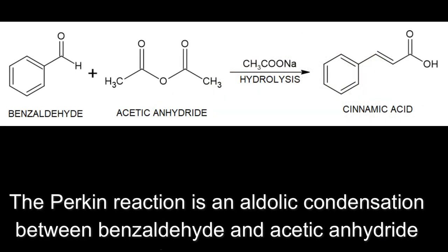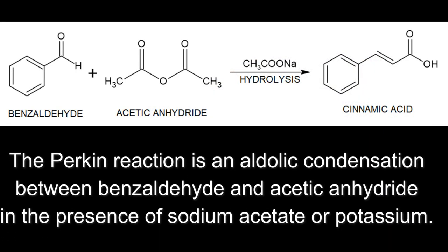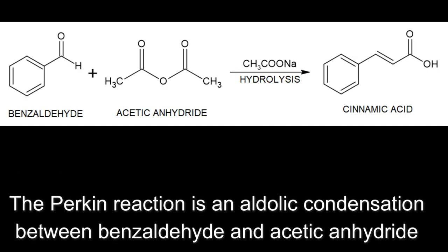In the laboratory, cinnamic acid is obtained by the Perkin reaction. The Perkin reaction is an aldolic condensation between benzaldehyde and acetic anhydride in the presence of sodium acetate or potassium.